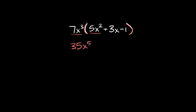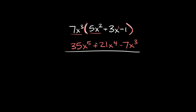Then 7x cubed times 3x: they're both positive, so plus 21, and adding the exponents — this x basically has a 1 on it, so 3 plus 1 equals 4 — giving us 21x to the fourth. The last term: 7x cubed times negative 1 equals negative 7x cubed. All the exponents are different so there's nothing to combine, and your final answer is 35x to the fifth plus 21x to the fourth minus 7x cubed.